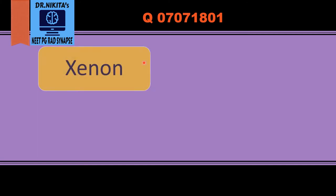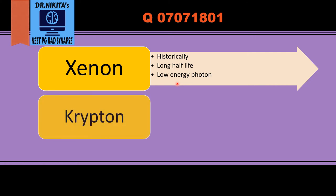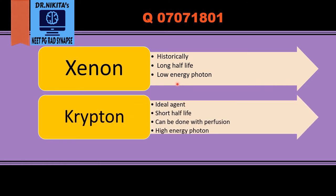Number one is xenon. Xenon has been historically used for ventilation scintigraphy, but it is not an ideal agent because it has a long half-life and low energy photons, so obtaining images with xenon is difficult.